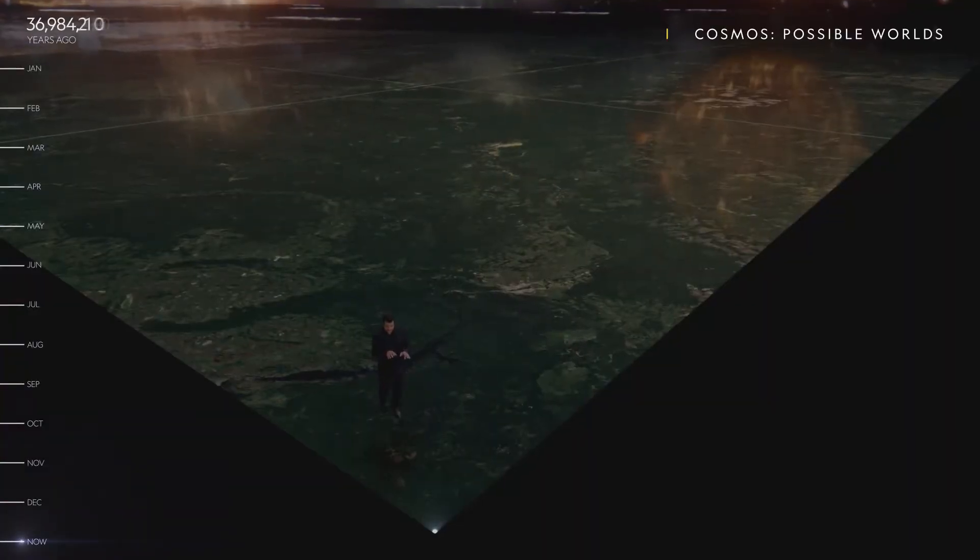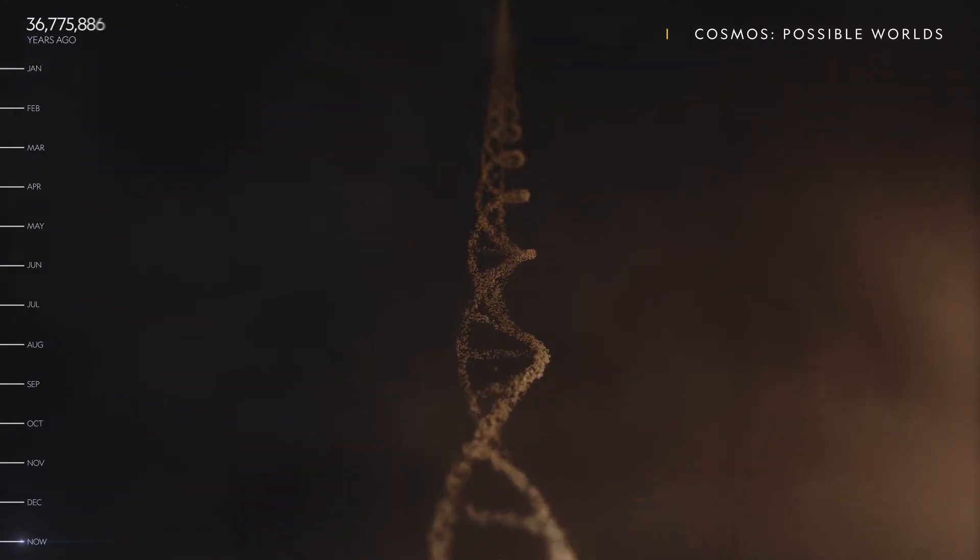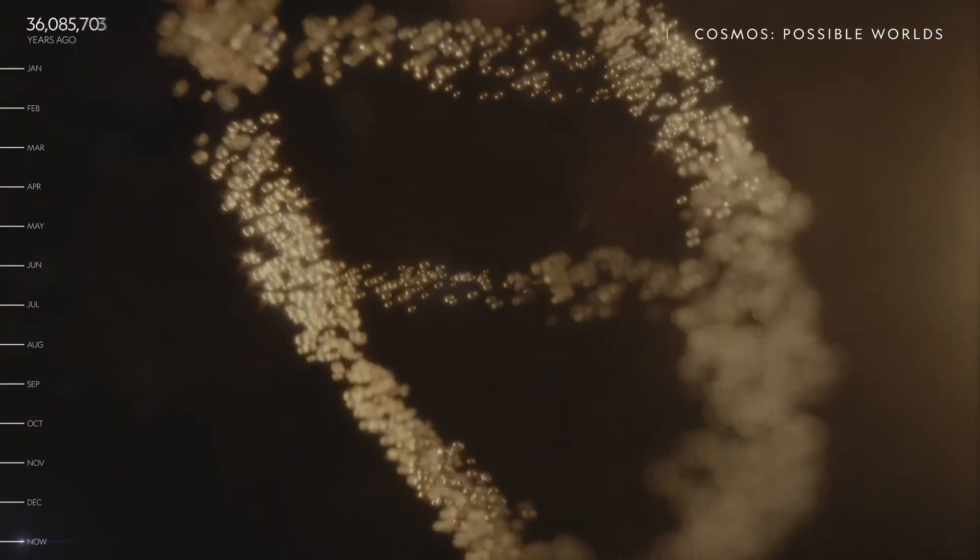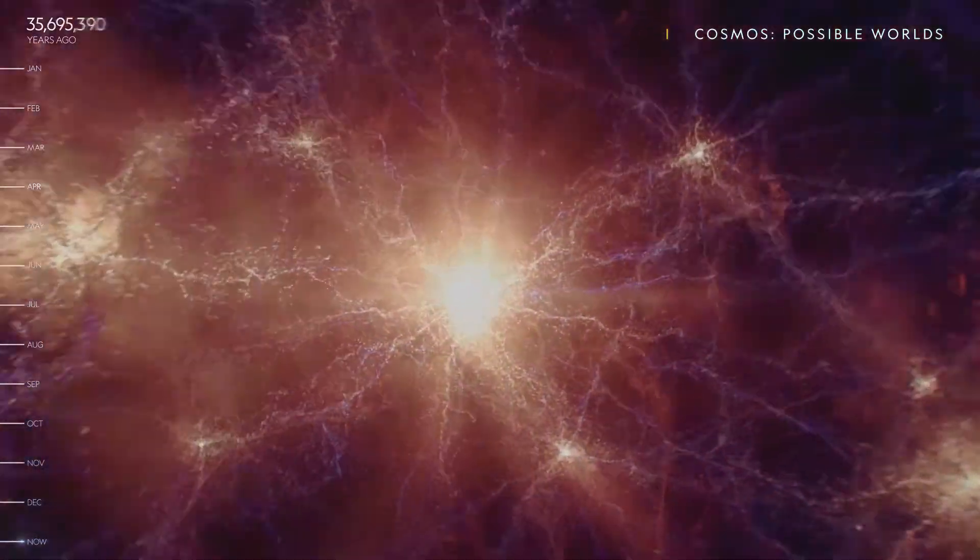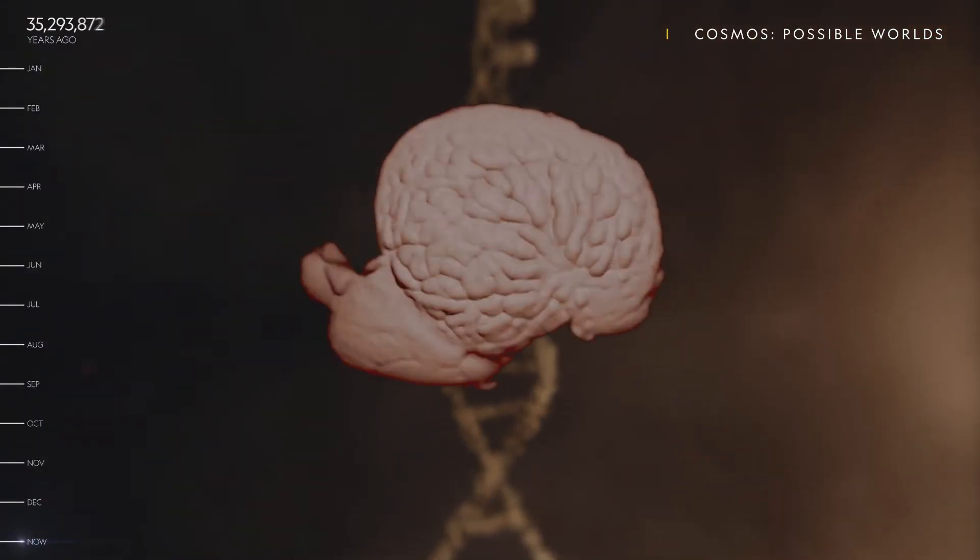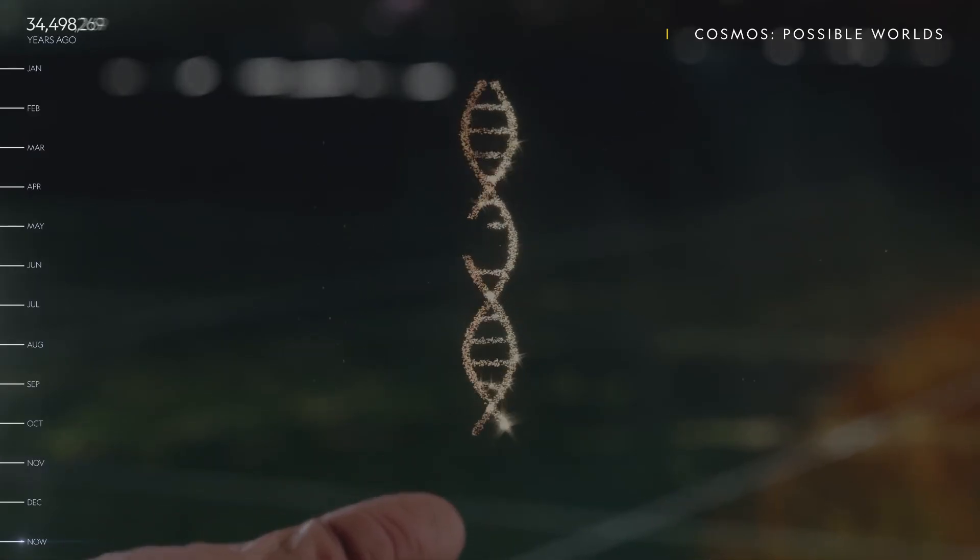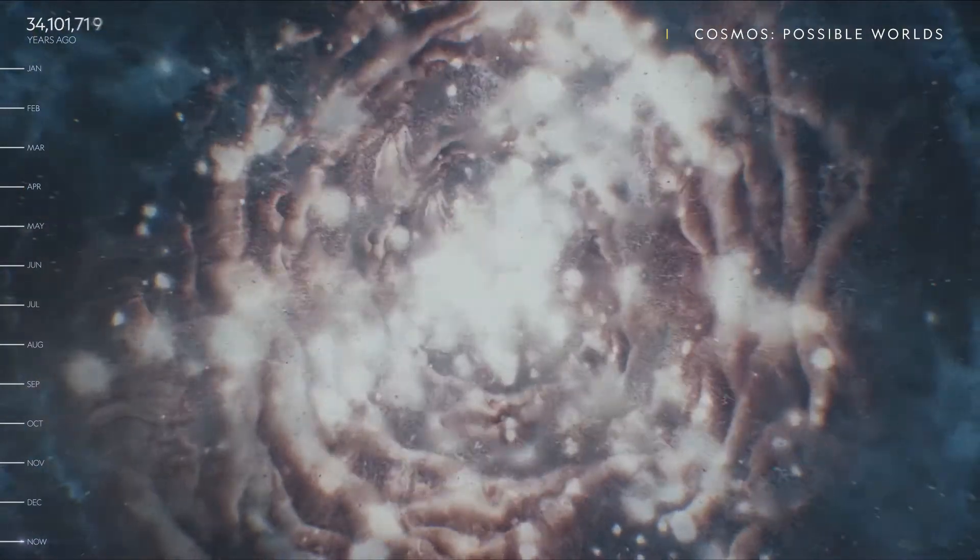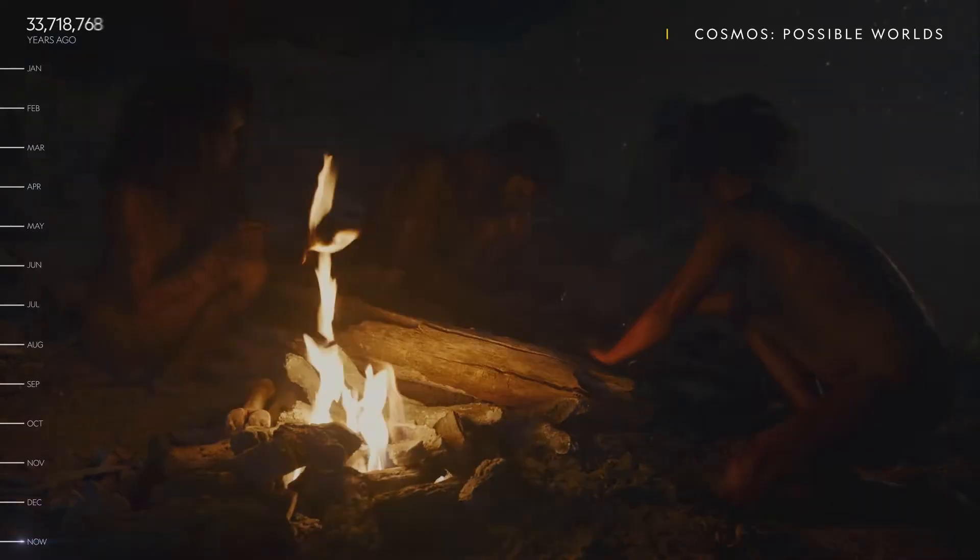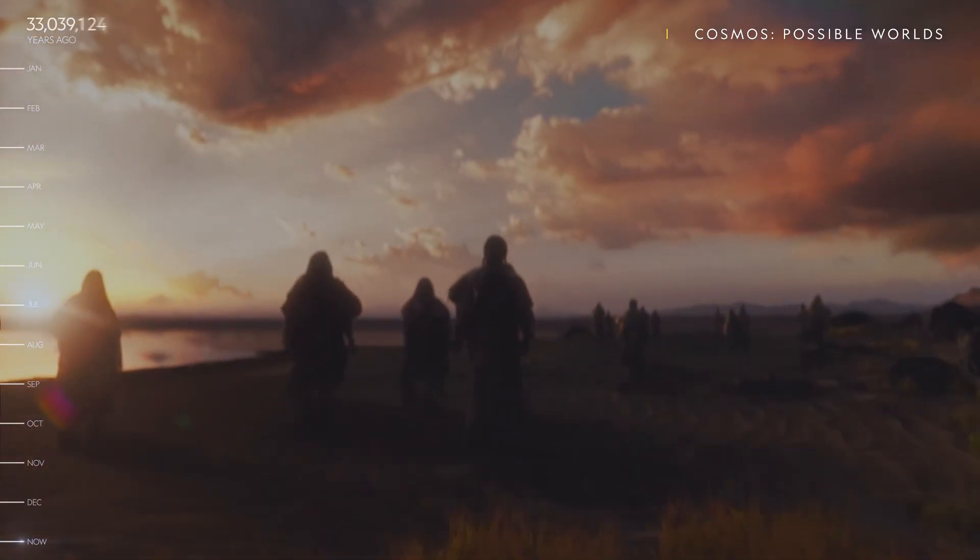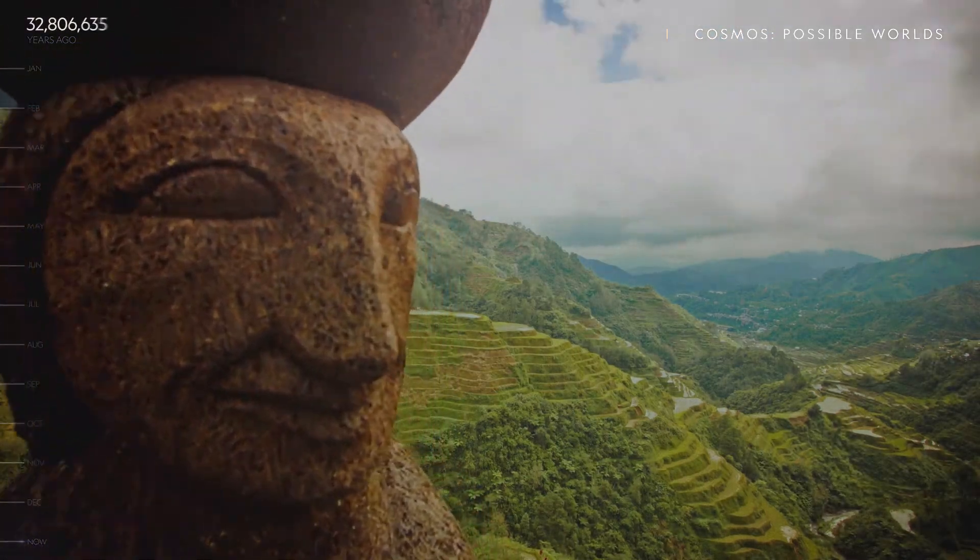And then late on New Year's Eve, a mutation occurred in the DNA of just one of our ancestors. One base pair of a single gene programmed the neocortex to grow larger still. Maybe it was a random zap from a cosmic ray or a simple error in transmission from one cell to another. Whatever it was, it led to a change in our species that would ultimately affect every other species of life on Earth.